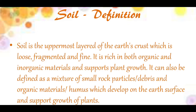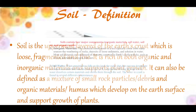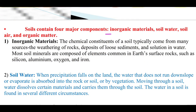Soil is the most important resource for us because we get almost all our food directly and indirectly from it — including vegetation, fruits, and other animal products. Soil has four major components: inorganic materials, soil water, soil air, and organic materials.